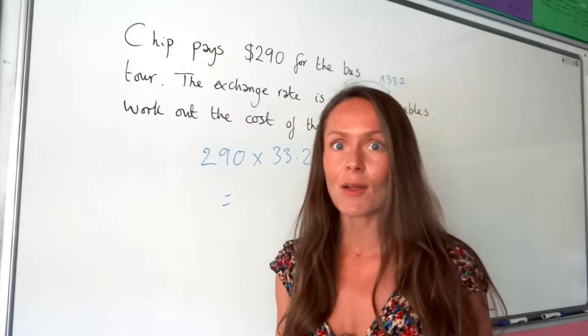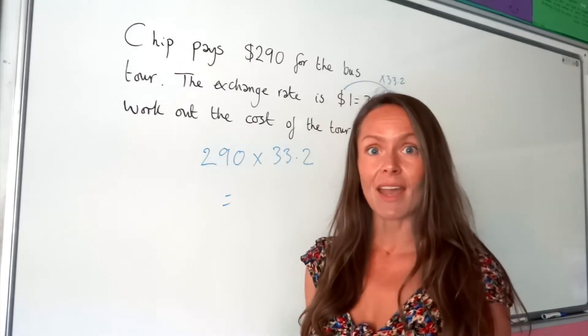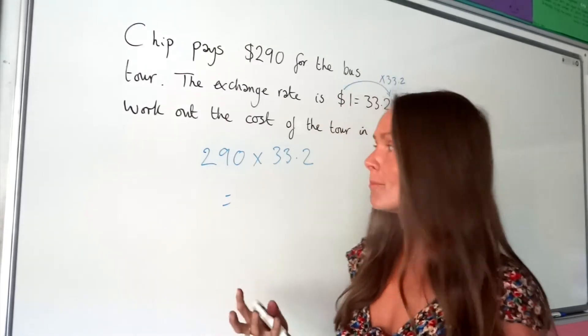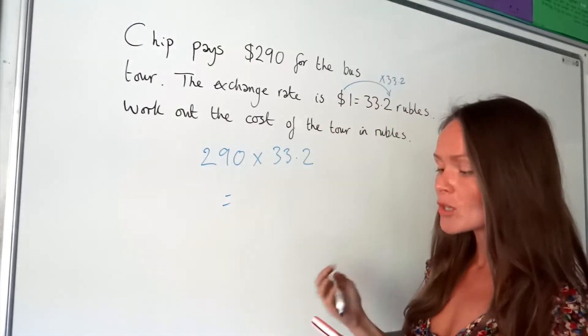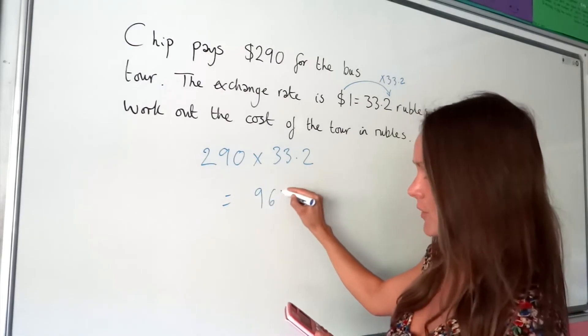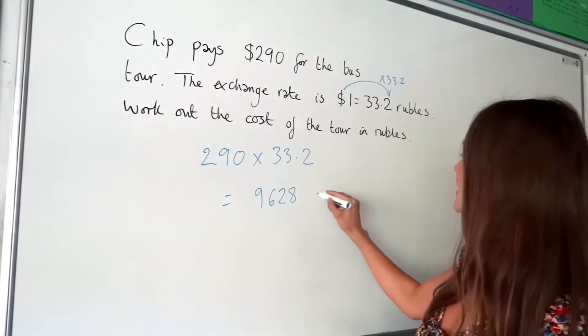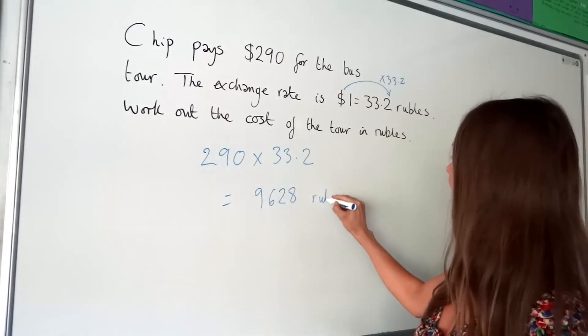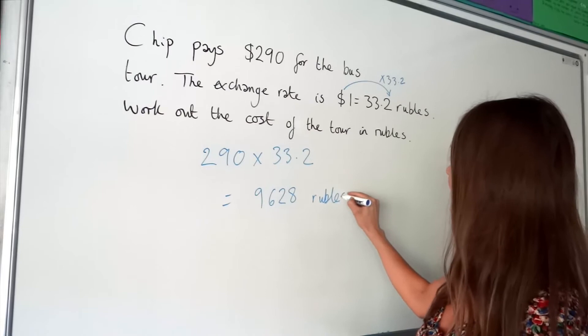When we put it in the calculator we get a whole number, so you don't need to round to three significant figures in this question — you can just leave it as it is.